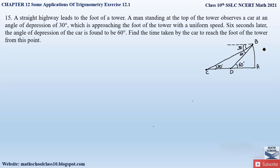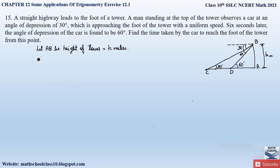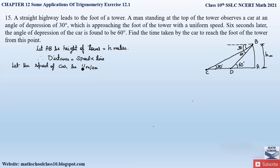Since the height of the tower is not given, let us take it to be h meters. Let AB be the height of the tower, which is h meters. Since the time taken by the car to travel from point C to point D is 6 seconds, we use the formula: distance = speed × time. The speed of the car is uniform throughout, so let the speed of the car be v meters per second.